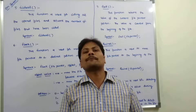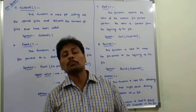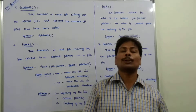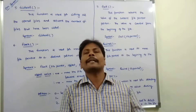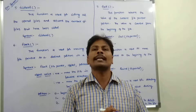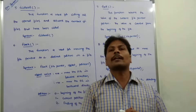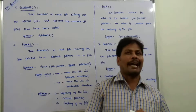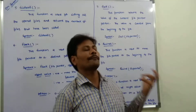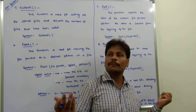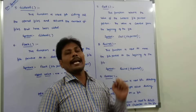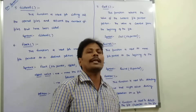The next function is ftell. This function returns the current file pointer position. For example, in a file with 500 characters, if the file pointer is at the 250th character, ftell returns 250. The syntax is: ftell(fp); where fp is the file pointer.